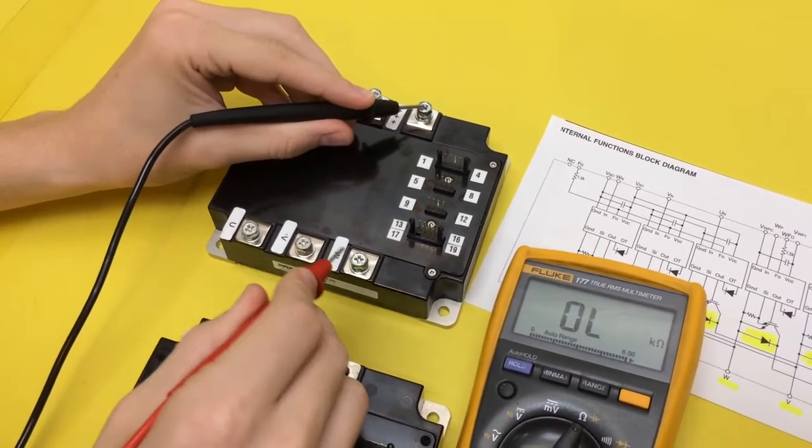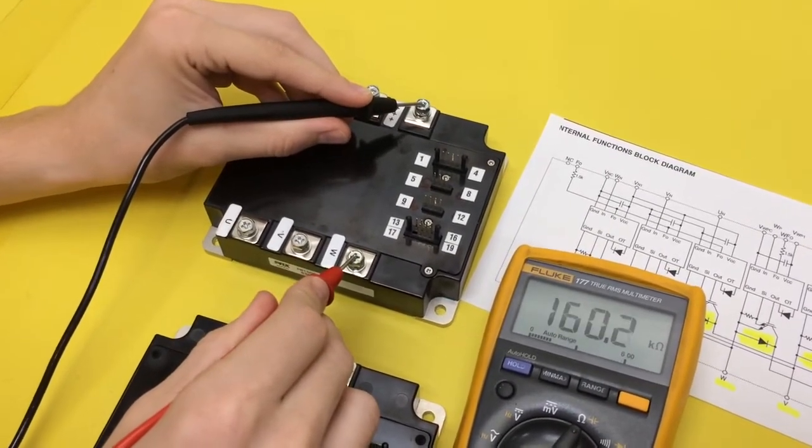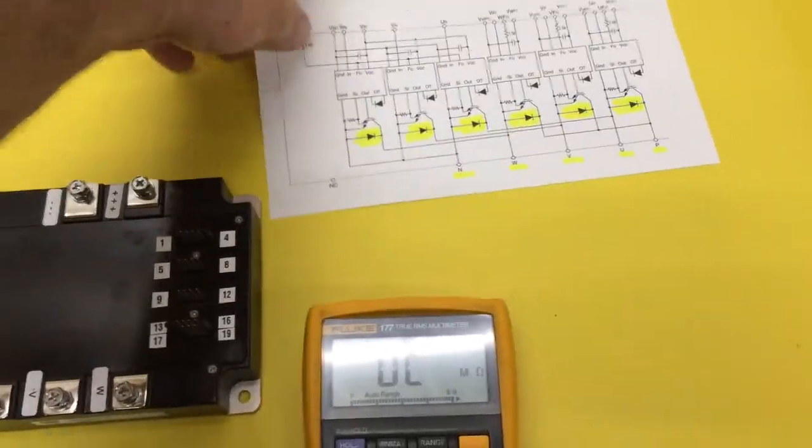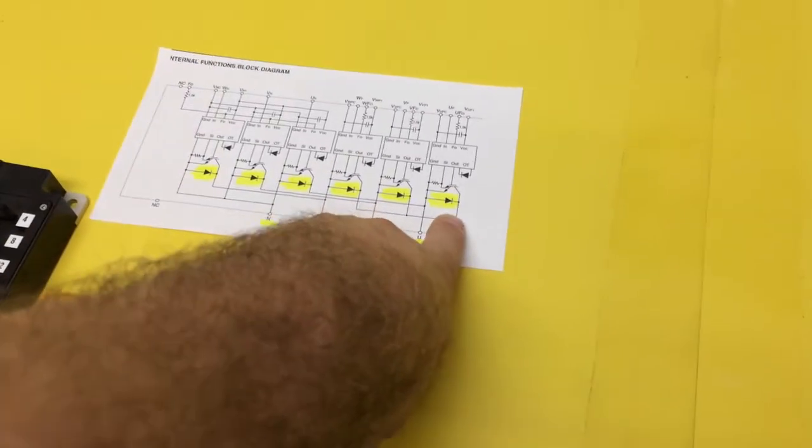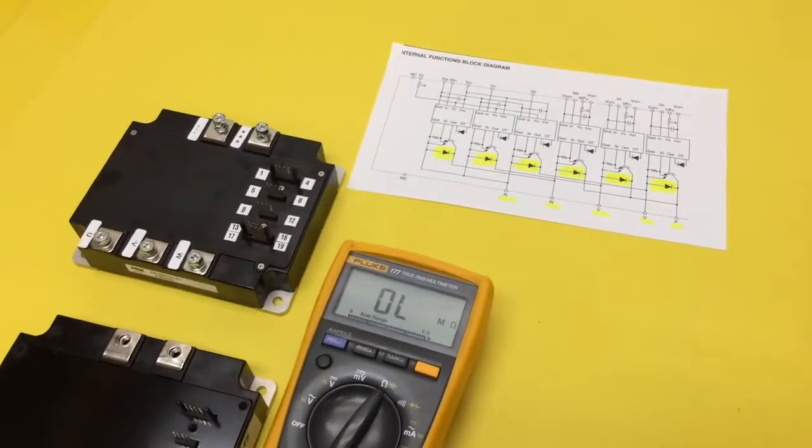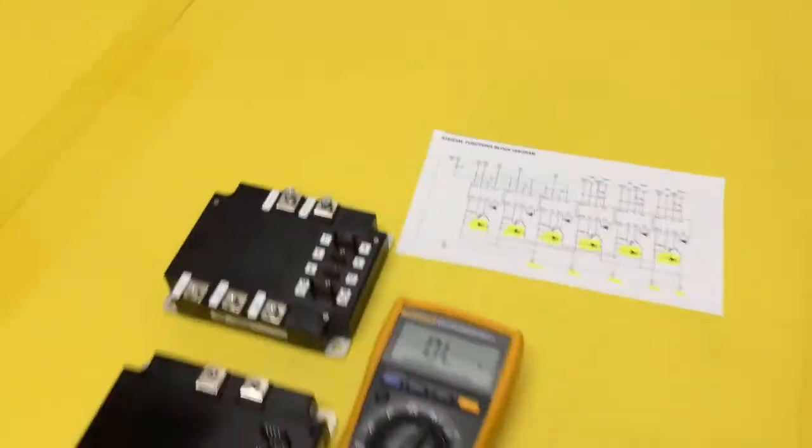That's a dead short. So you can do this test on ohms if you don't have a diode test scale. And all we're doing is testing these six freewheel diodes. In our next video, we're going to learn how to test the gate junctions.